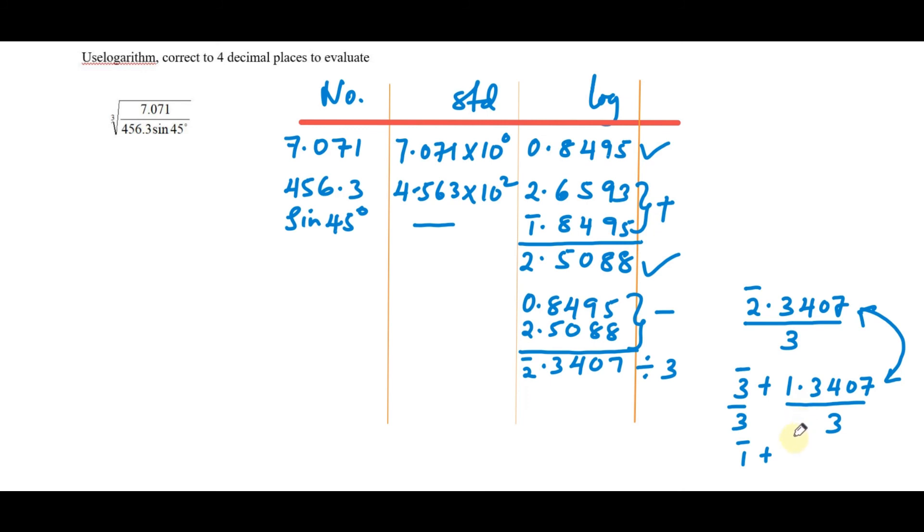Bar 3 divided by 3 is bar 1. When you divide these, you get 0.4469. So when you add bar 1 plus 0.4469, you get bar 1.4469. So this is what you get here: bar 1.4469.